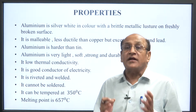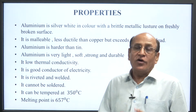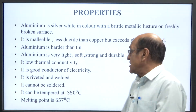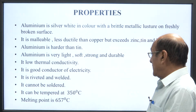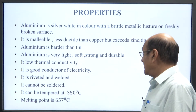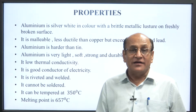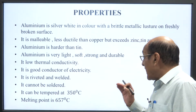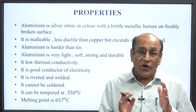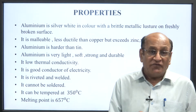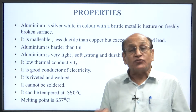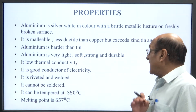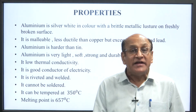It is a good conductor of electricity, so all equipment and transmission lines are made of aluminium. It can be riveted and welded. It cannot be soldered — though it is riveted or welded, it cannot be soldered. It can be tempered at 350 degrees centigrade.